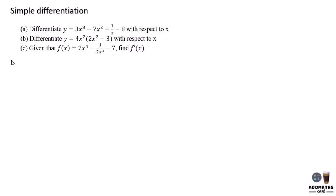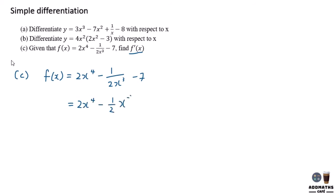Now we are trying to solve question C. Another way of writing differentiation is to write f prime x. We have 2x to the power of 4 minus 1 over 2x cubed minus 7. Bring this into indices form: 2x to the power of 4 minus 1 over 2 x to the power of negative 3, minus 7.